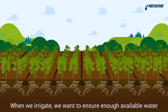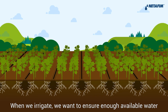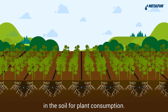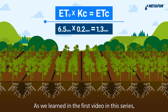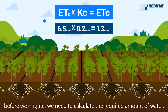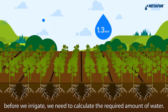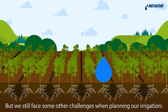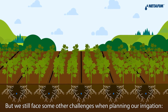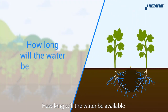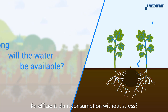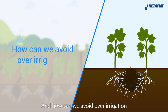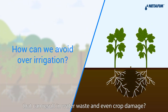When we irrigate, we want to ensure enough available water in the soil for plant consumption. As we learned in the first video in this series, before we irrigate, we need to calculate the required amount of water. But we still face other challenges when planning our irrigation. How long will the water be available for efficient plant consumption without stress? And how can we avoid over-irrigation that can result in water waste or even crop damage?